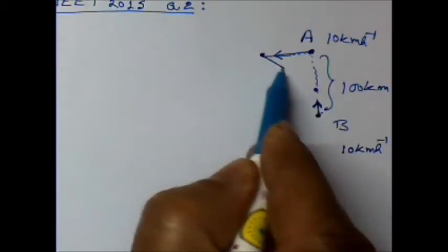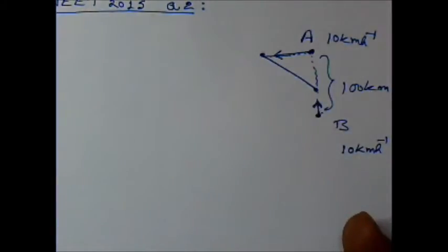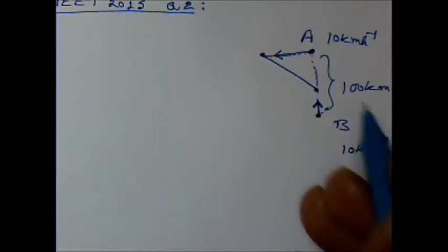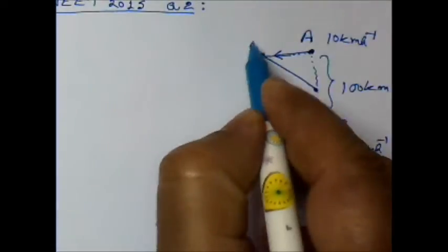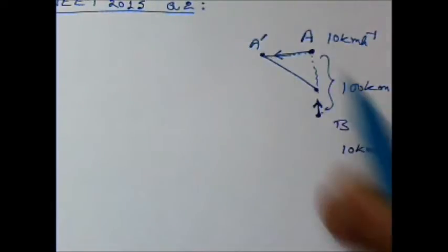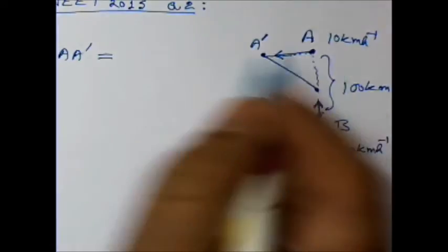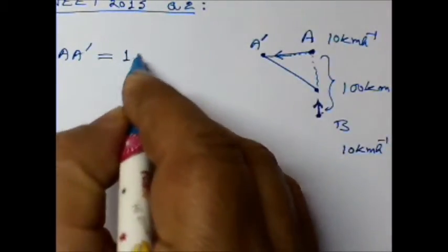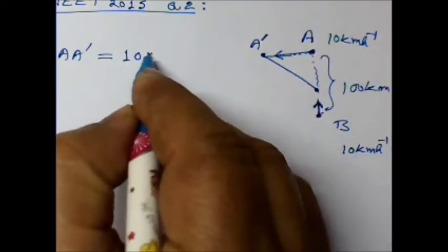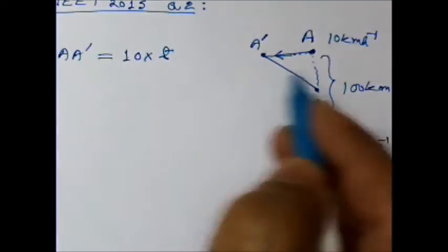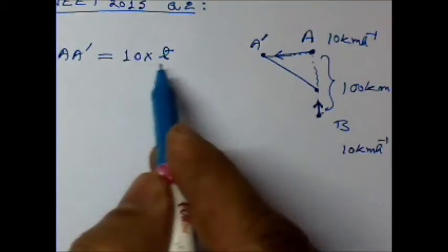So the distance between them will be this. So if I call this A dash, then AA dash will be equal to the speed, 10 kilometers per hour, times T hours. So AA dash will be 10 into T.